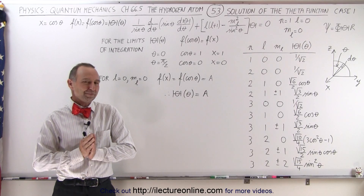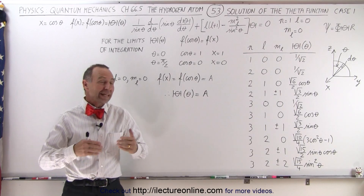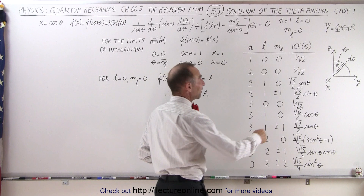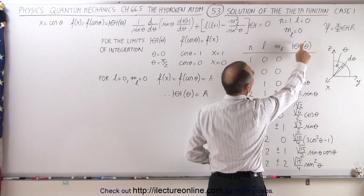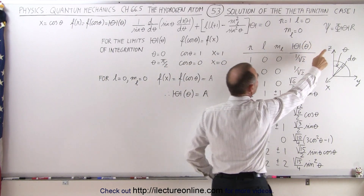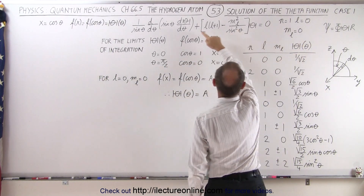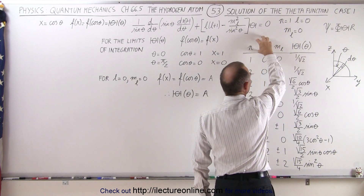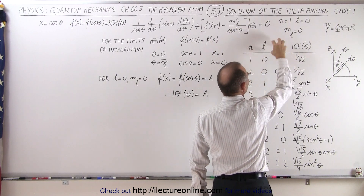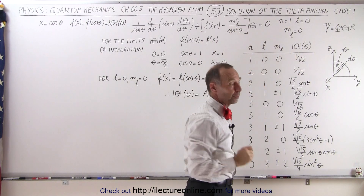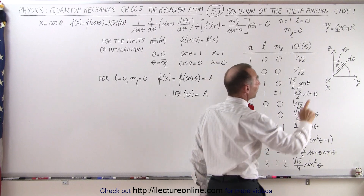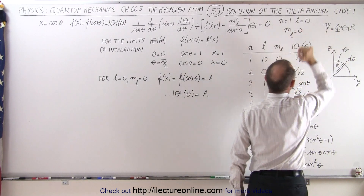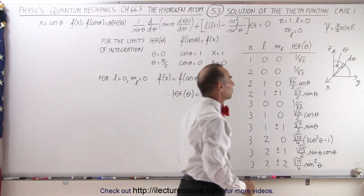Welcome to ElectronLine. Here we have case number one. We're trying to find the solution for the differential equation in terms of when L is equal to zero and M sub L is equal to zero. In other words, we're trying to find the solution for the theta function in this particular case.